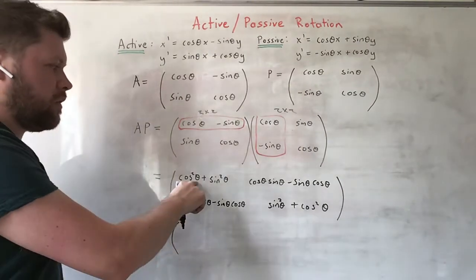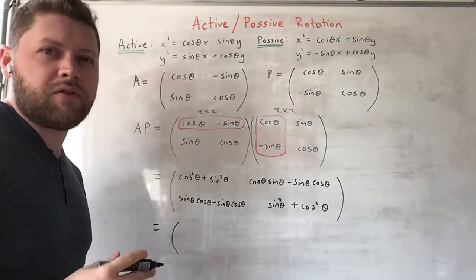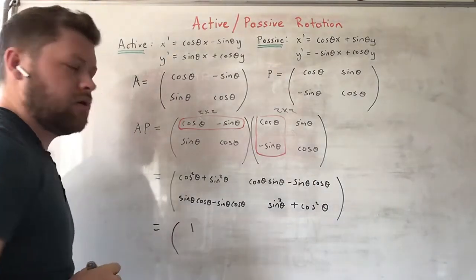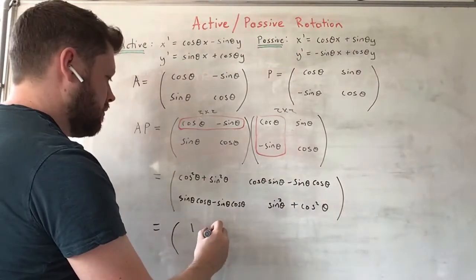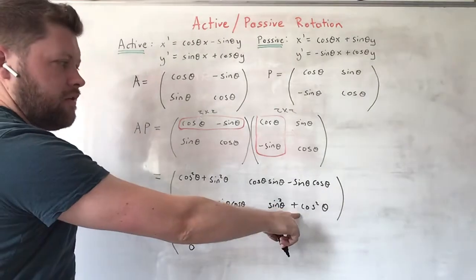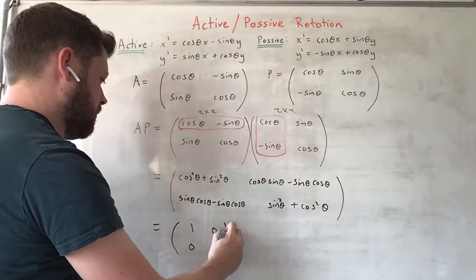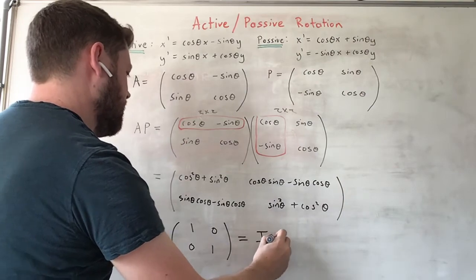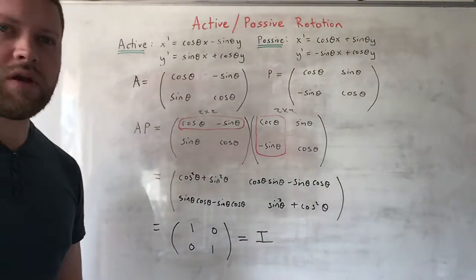Cosine squared θ plus sine squared θ is a very famous trigonometric identity which gives you one. The off-diagonal terms cancel, giving zero, and the other diagonal also gives one. So the result is the same as the identity matrix — the same as doing nothing.